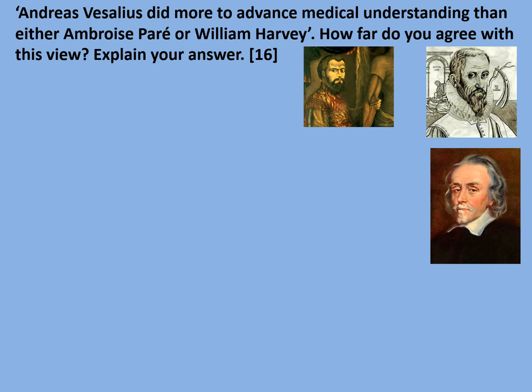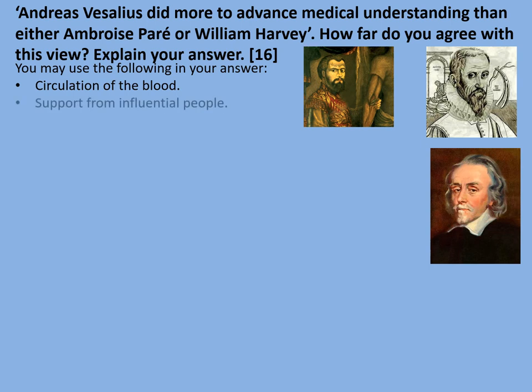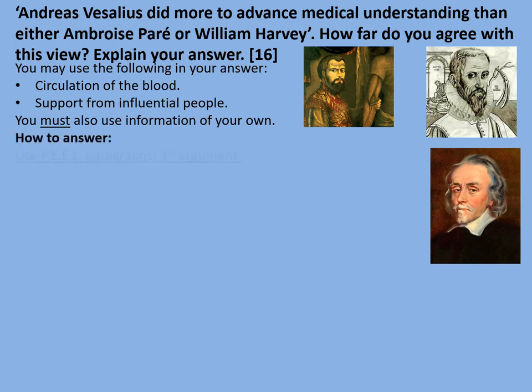With these longer 16-mark answers in the exam, you'll be given stimulus points to help. The question will say 'you may use the following in your answer': circulation of the blood — remember who that relates to — and support from influential people. Think about the influential people who supported each of the big three. You must also use information of your own. Here's how to answer using PEEL paragraphs: Point, Example, Explain, and Link.